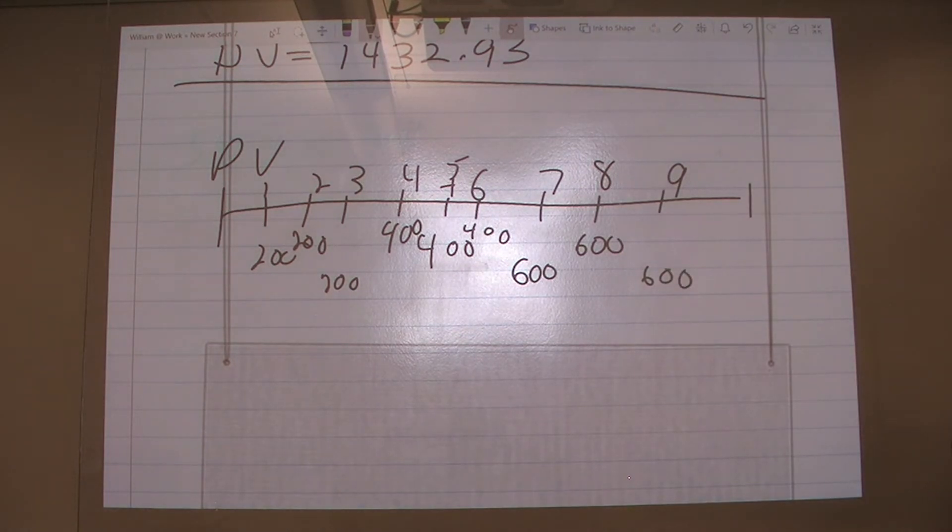All right, so again, we can do this the formula way. And we need to divide each one of these by, in this case our rate was 7%. So we can do this the long way. We take every cash flow and we divide it by 1.07 to the 1, and I'll skip all the intermediate, but it's the same thing, and this would be 1.07 to the 9.